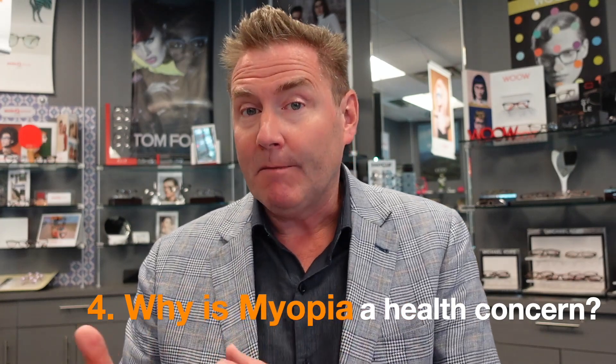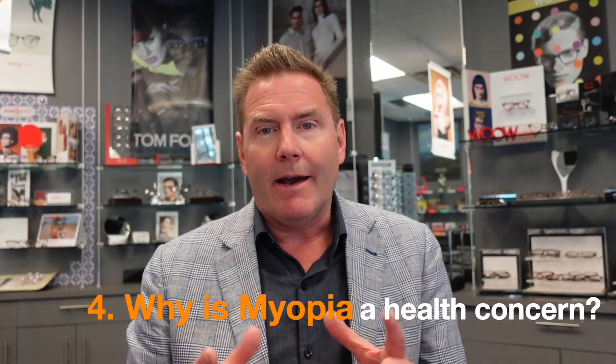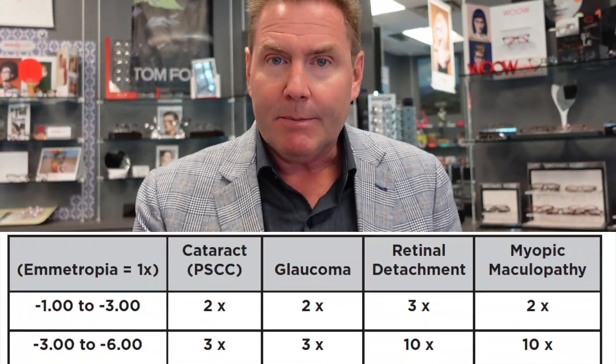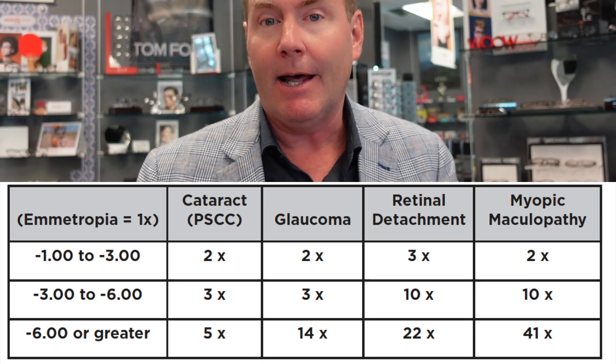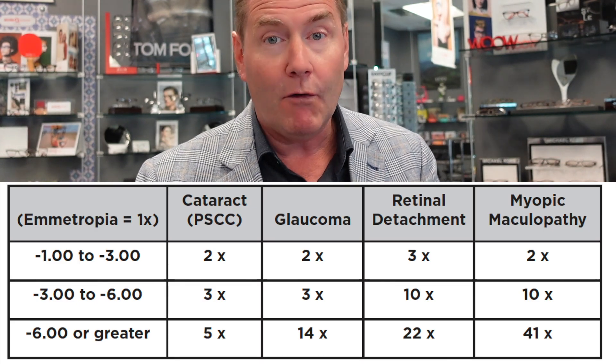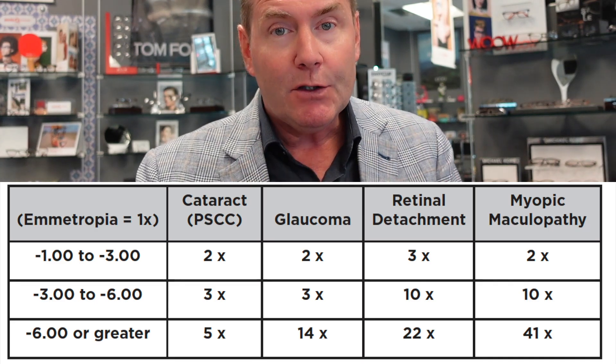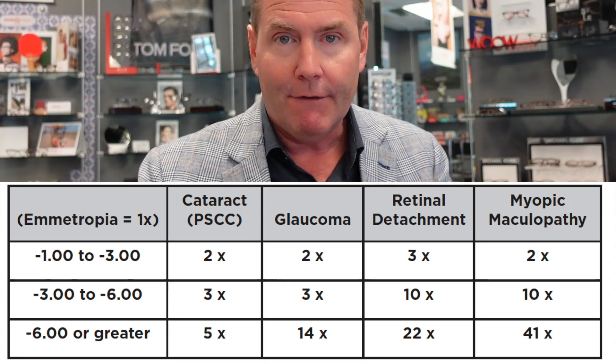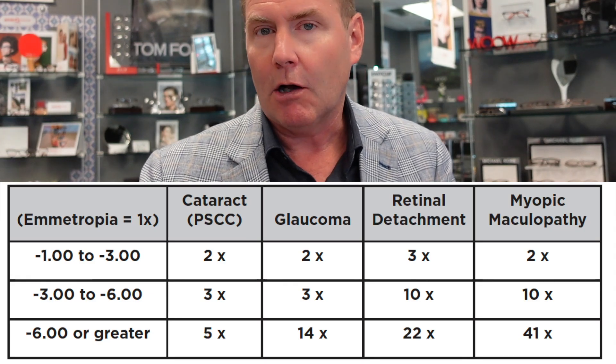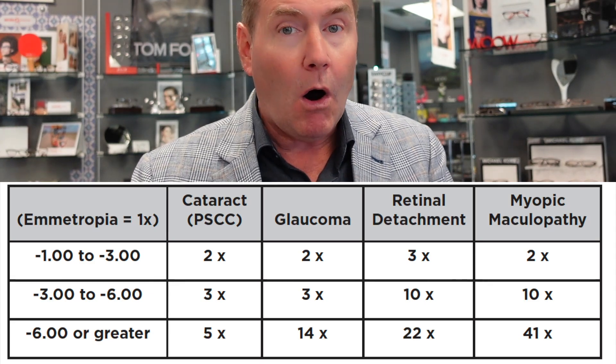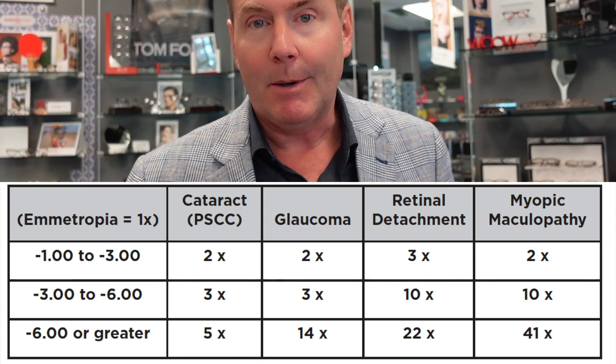Question number four: why is the progression of myopia a health concern? If your eyeball is getting longer, it's basically stretching all the internal structures and tissue of the eyeball, and that can put you at risk for eye diseases when you're older. In particular, individuals with high myopia — defined as myopia over minus six — will have a much higher risk of developing retinal detachments, cataracts, glaucoma, and conditions like myopia maculopathy. If we can reduce the amount of myopia, we can also reduce the risk of those eye diseases in adulthood.